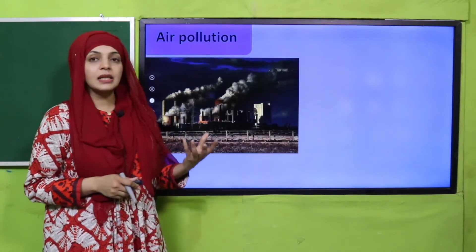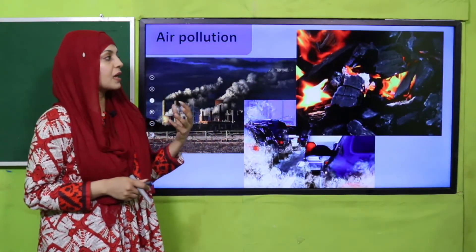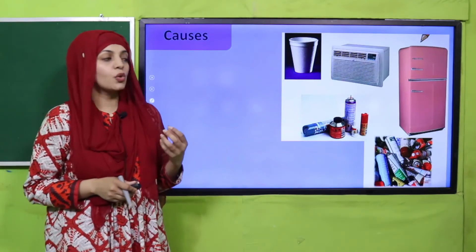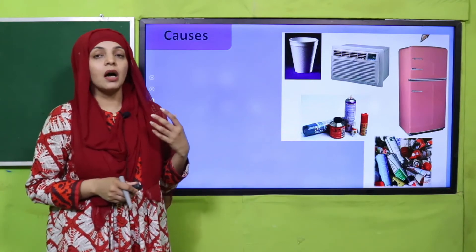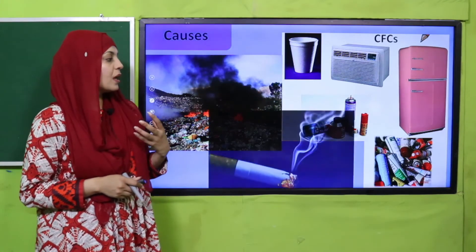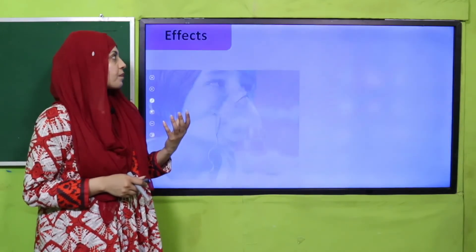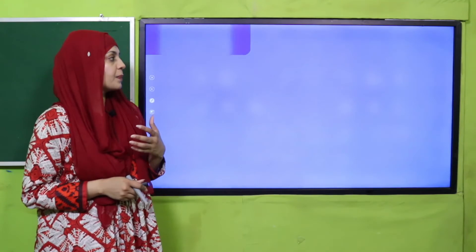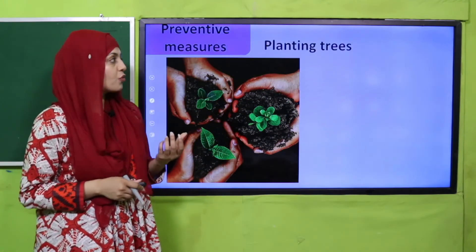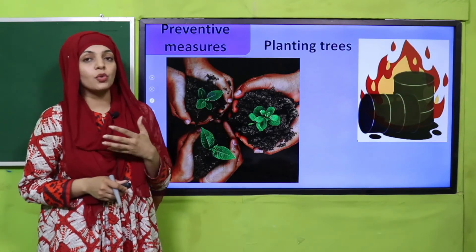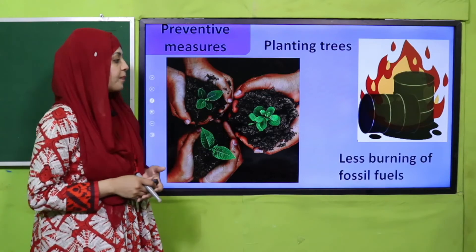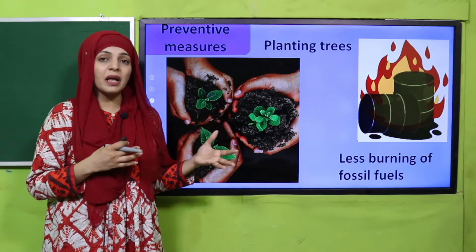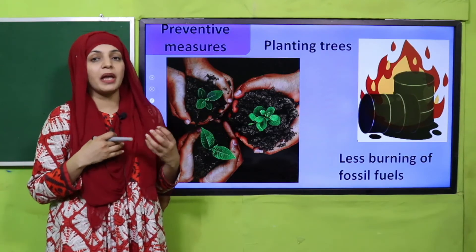Air pollution is caused by factories, car exhaust, burning of coal, air conditioners, aerosols, and insect repellents — also by cigarettes. Its effects on our body include damage to internal organs: the brain and lungs are very badly affected. To prevent this, we should plant more and more trees and stop burning fossil fuels. We must move towards natural resources like wind energy and solar energy — these are the types of energy we should be using.